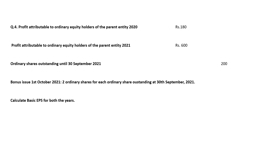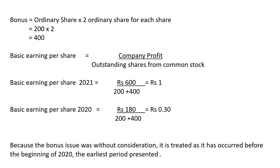We have to calculate Basic Earnings Per Share for both years — 2020 and 2021. First we will calculate for 2021, then for 2020. For the bonus issue, 2 ordinary shares are issued for each share, so: 200 ordinary shares × 2 = 400 bonus shares total.